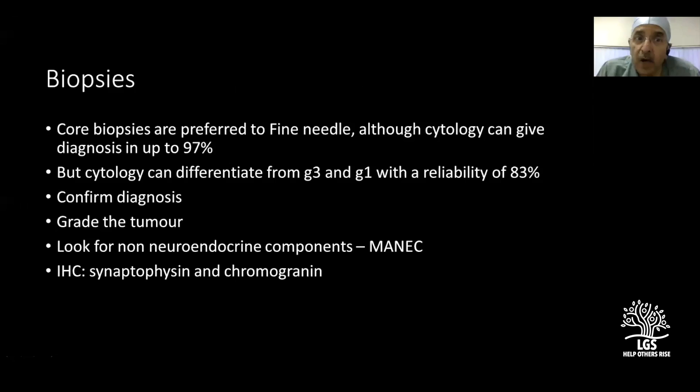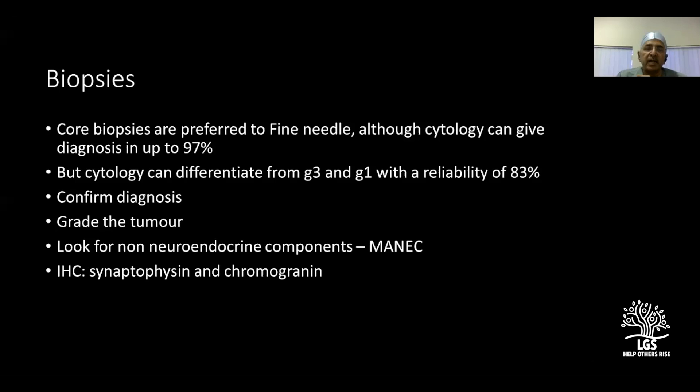Core biopsies are preferred over fine needle aspiration, although cytology has become very accurate — pathologists can diagnose NETs in up to 97 percent of cases. However, differentiating G3 from G1 by cytology has only 83 percent reliability. The aims of biopsy are to confirm diagnosis, grade the tumor, and look for non-neuroendocrine components such as MiNEN. Immunohistochemistry looks for synaptophysin and chromogranin in the tissue.